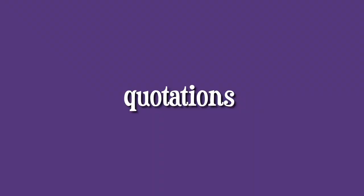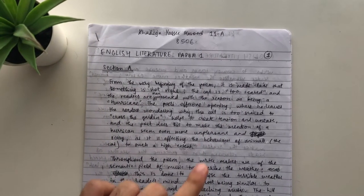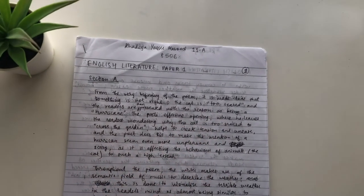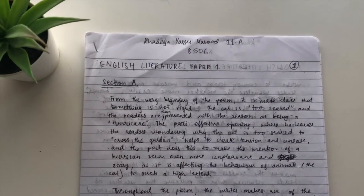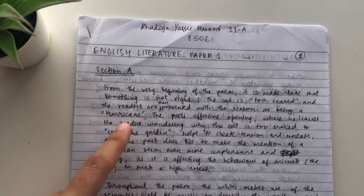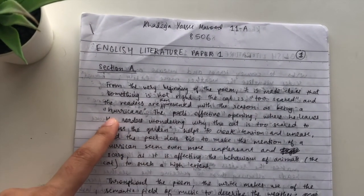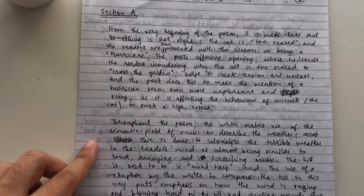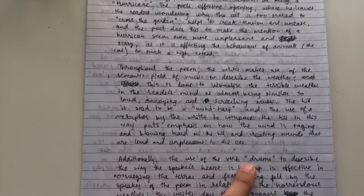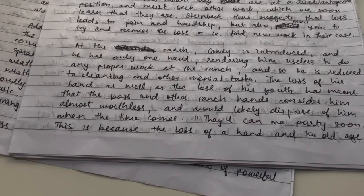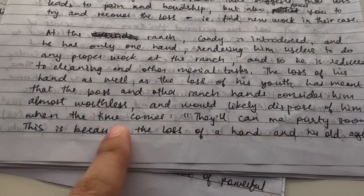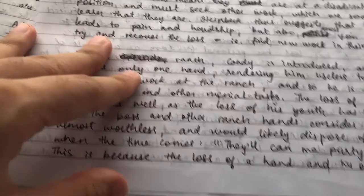Quotations are another important part of literature essays — you cannot write an essay without them. As you can see from my unseen poem answer, I have short quotations embedded throughout the explanation, like 'too scared' and 'hurricane.' Quotations provide evidence for your points, and they should be short so they don't look long-winded. Don't forget to include them, but keep them brief.